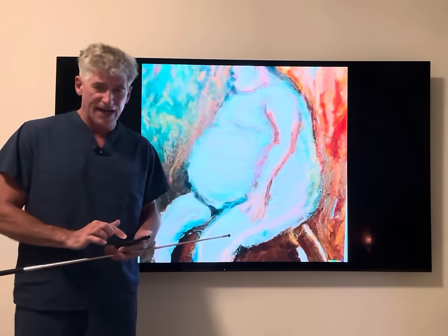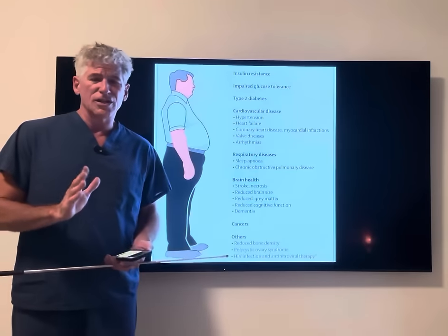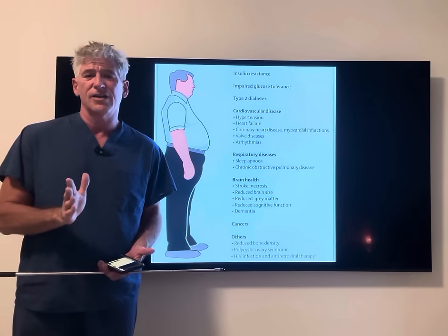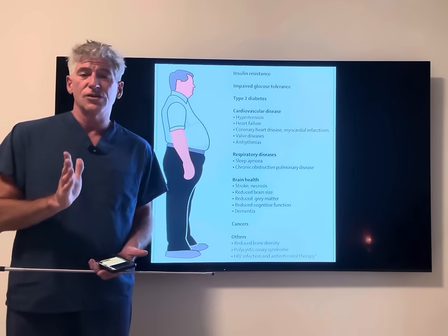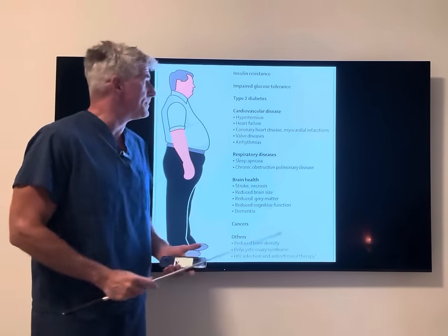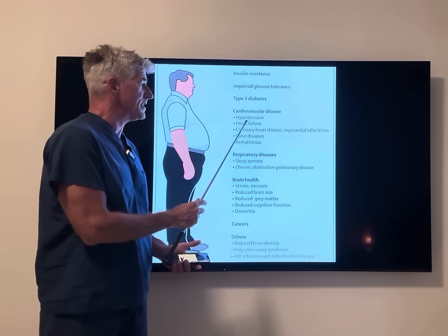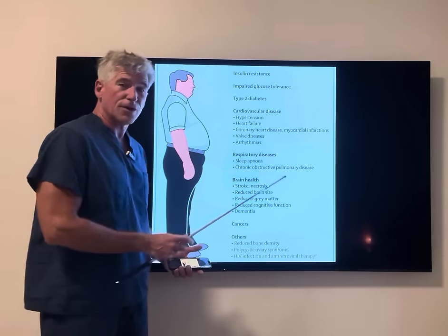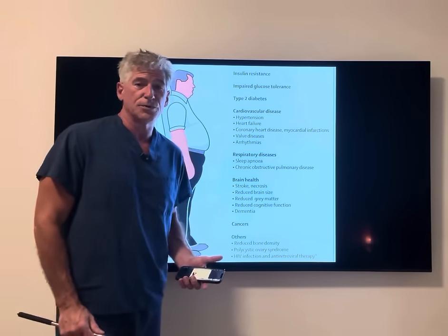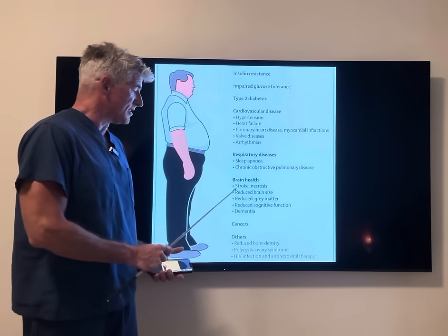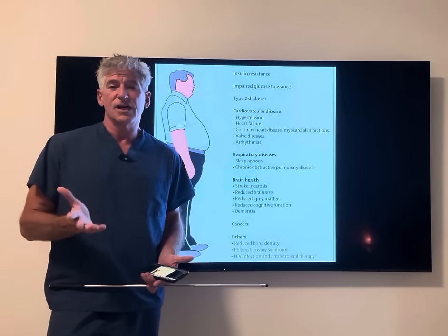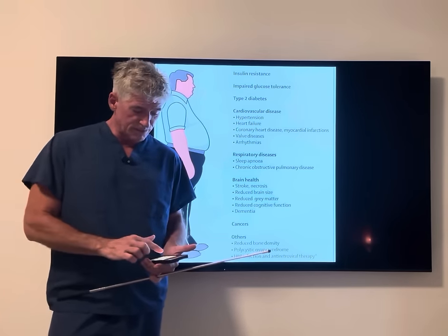What is belly fat? First, let's look at the problems it causes — a lot of health conditions people probably aren't aware of. Insulin resistance, impaired glucose tolerance, diabetes, cardiovascular disease, hypertension, heart failure, congestive heart failure, heart attacks, valve problems, arrhythmia, sleep apnea, COPD, brain health — lots of different things are associated with poor metabolic health and its consequence, which is obesity, abdominal obesity in particular.